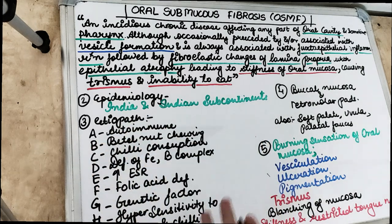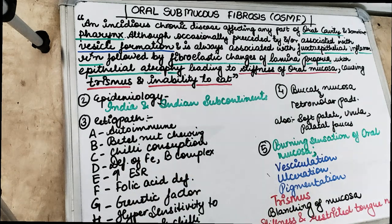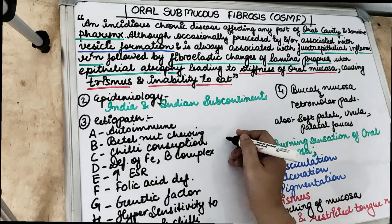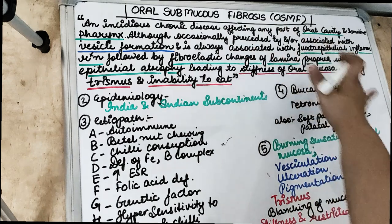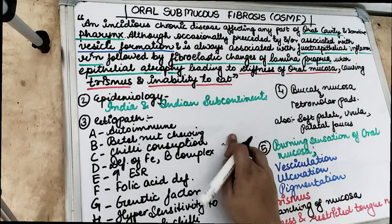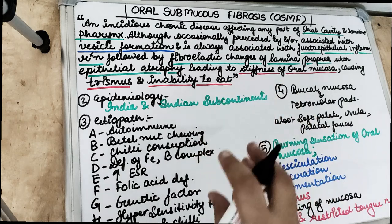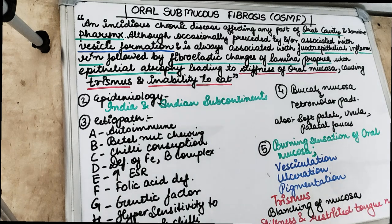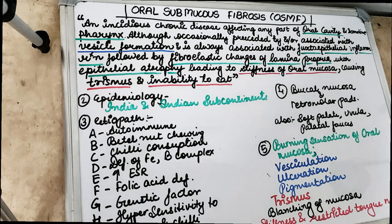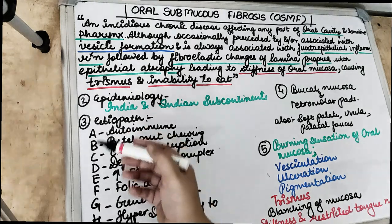There is trismus — the patient is not able to open the mouth and not able to eat properly. There is burning sensation. The mucosa is very stiff and there is blanching of the mucosa in specific areas. Looking at what causes oral submucous fibrosis, the etiology can be remembered as ABCDEFGH.